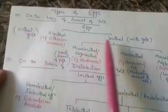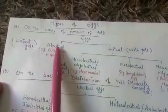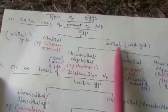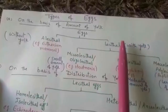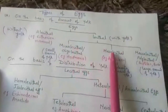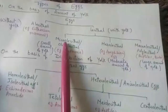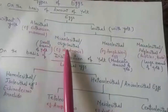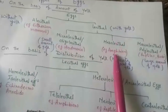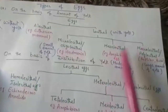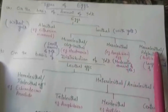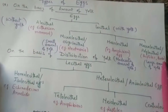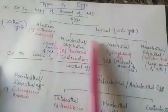Eggs are classified into two categories on the basis of amount of yolk. Alecithal means without yolk — example is eutherian mammals. Lecithal means with yolk. On the basis of amount of yolk, lecithal eggs are further classified into three categories: microlecithal or oligolecithal, having a small amount of yolk — example is Amphioxus; mesolecithal, having a moderate amount of yolk; and macrolecithal or polylecithal, having a large amount of yolk — example is reptiles and birds.